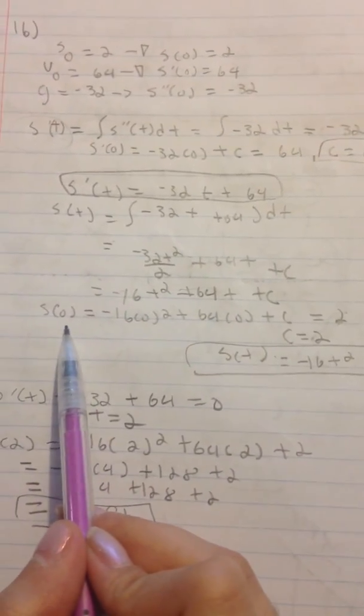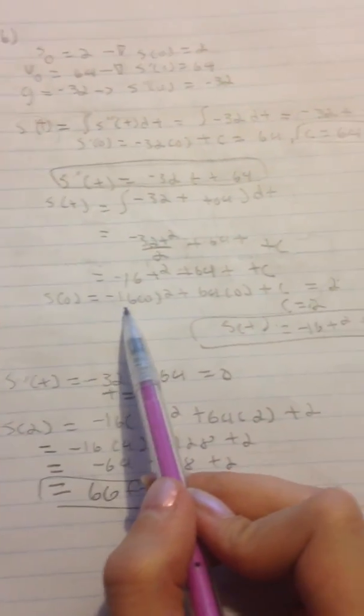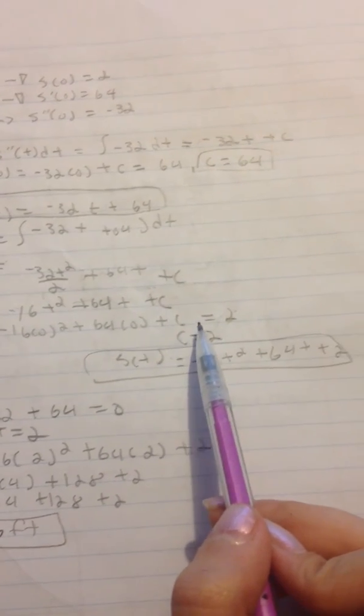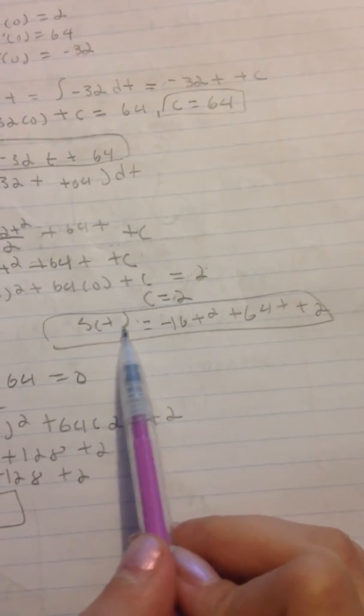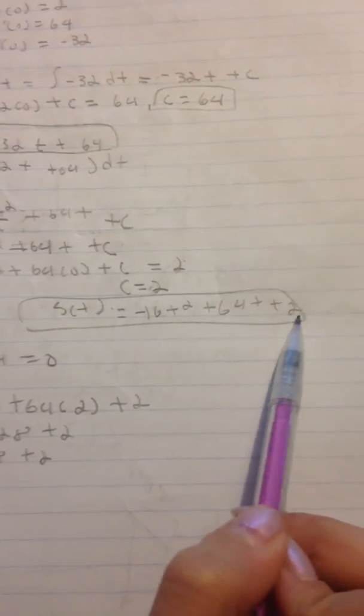Now we have to find out what this C is. We have S of 0 equals negative 16T squared plus 64T plus C. Setting that equal to 2, we get C equals 2. So S of T equals negative 16T squared plus 64T plus 2.